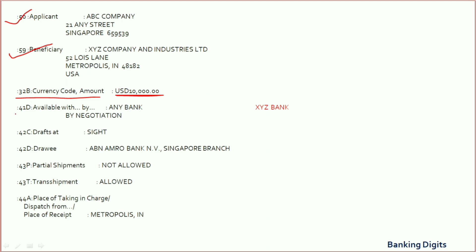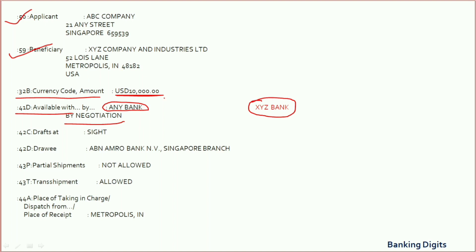Field 41D refers to which bank the LC is available with and available by — negotiation, acceptance, payment, or deferred payment. Here it is mentioned as 'any bank,' meaning the beneficiary can present documents to any bank within the period of presentation. However, it can also be restricted to a specific bank — if a specific bank name is mentioned after the slash, then only that bank can honor or negotiate the documents.